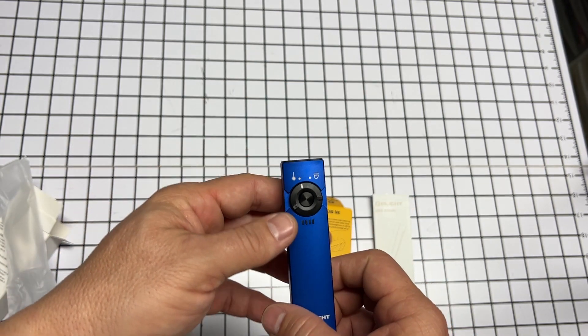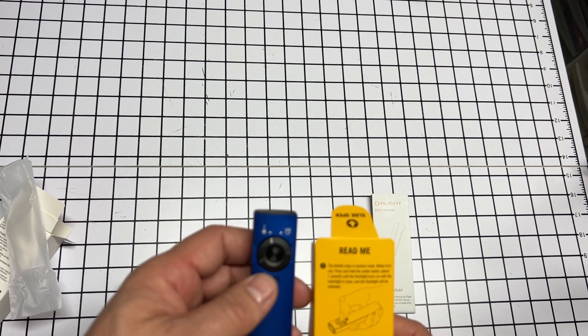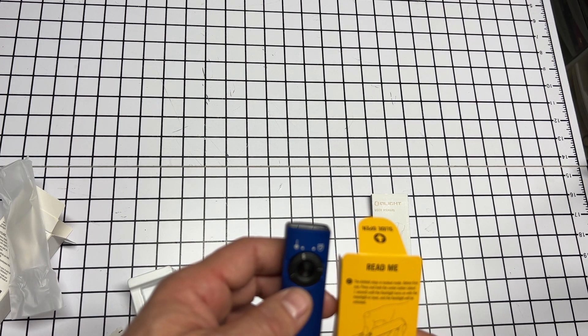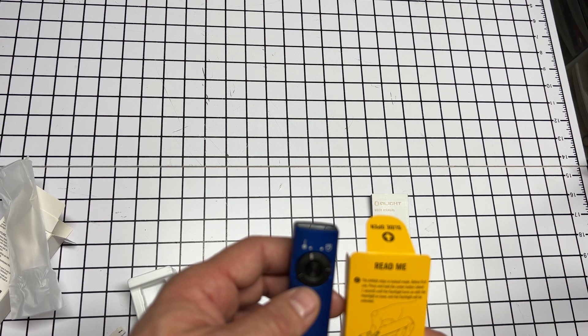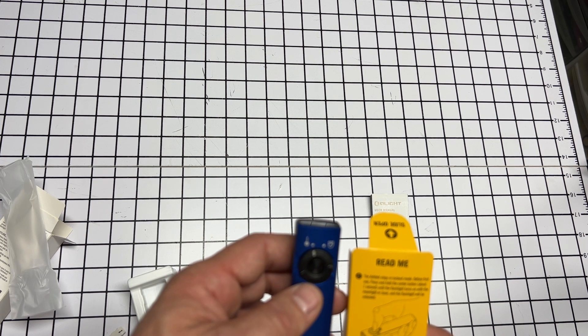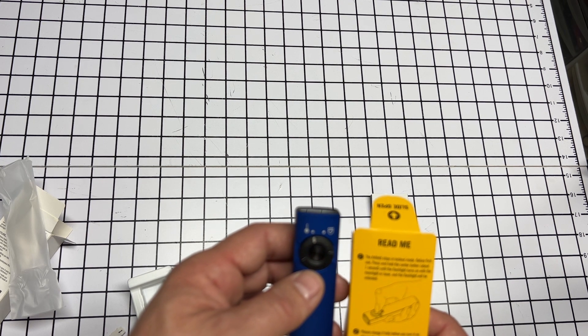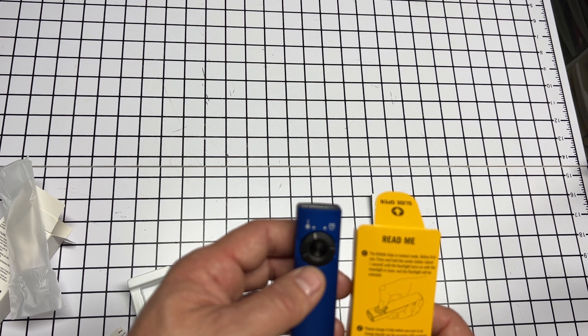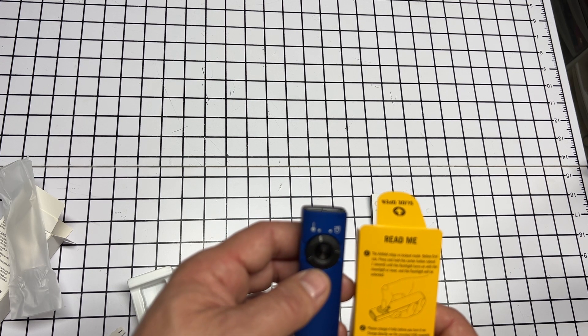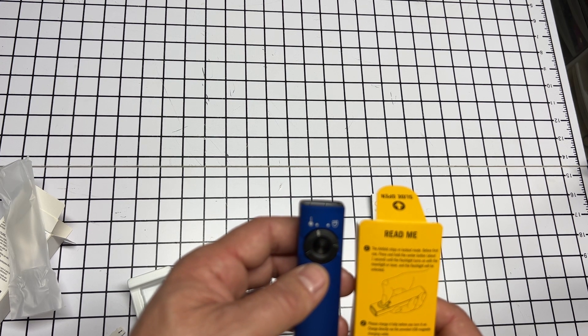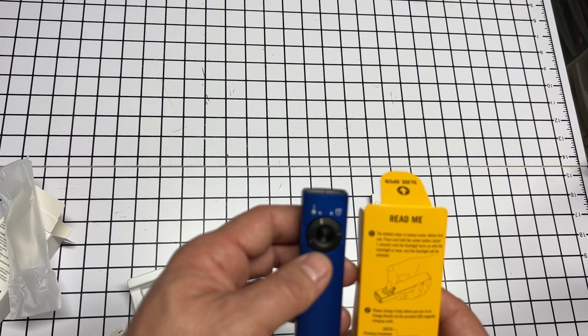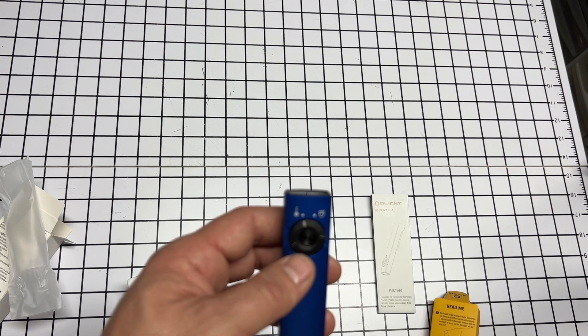It says to hold the center button for one second until the flashlight turns on with the moonlight or laser and the flashlight will be unlocked. Please charge it fully before you turn it on. Charge directly via the provided USB magnetic charge cable. Green means completely charged, red means charging. All right, so we're going to unlock this.